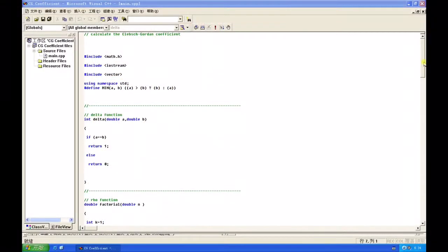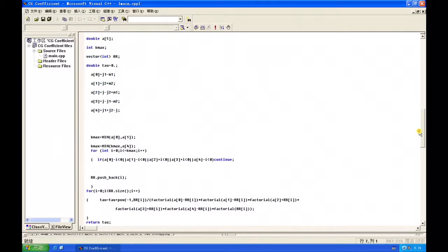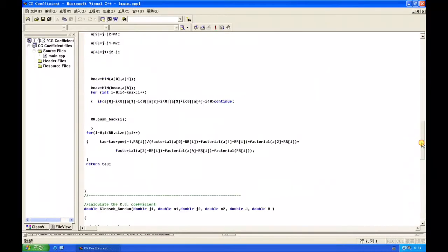For our video assignment, we would like to use a C program to calculate CG coefficient by using the method that we mentioned in Part 2, and this is the code that we are going to use.